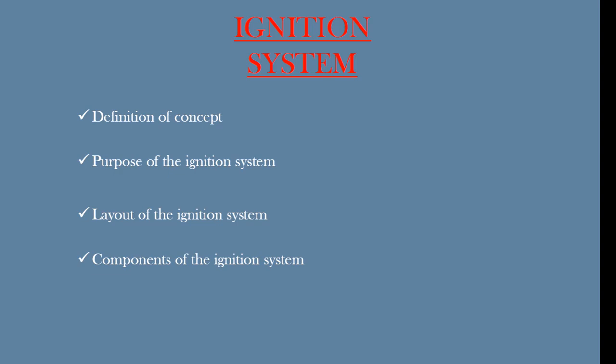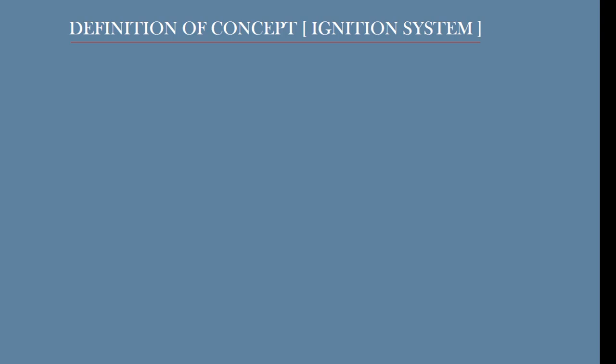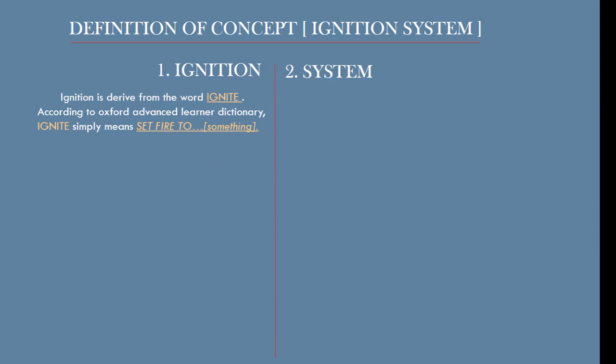Let's go through the first, which is the definition of concepts. Our concept here is the ignition system. Whenever you are given a concept to define, the first thing you do is to split that concept into units. If we do that here, we have 'ignition' and we have 'system.' Look for the meaning of each word. The first word is ignition, and ignition is derived from the word 'ignite.'